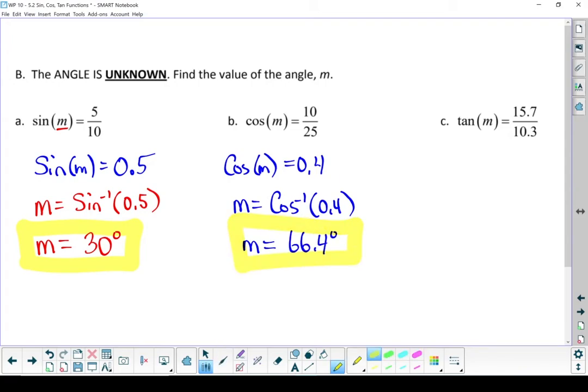And tan, same thing. Divide out that fraction, even though it's decimals in it as well. Tan of m equals 1.524. Keep three decimal places if you've got more than that. We're going to do the inverse tan. So m equals the inverse tan, so tan to the negative 1 of 1.524. In this case, m equals 56.7 degrees.